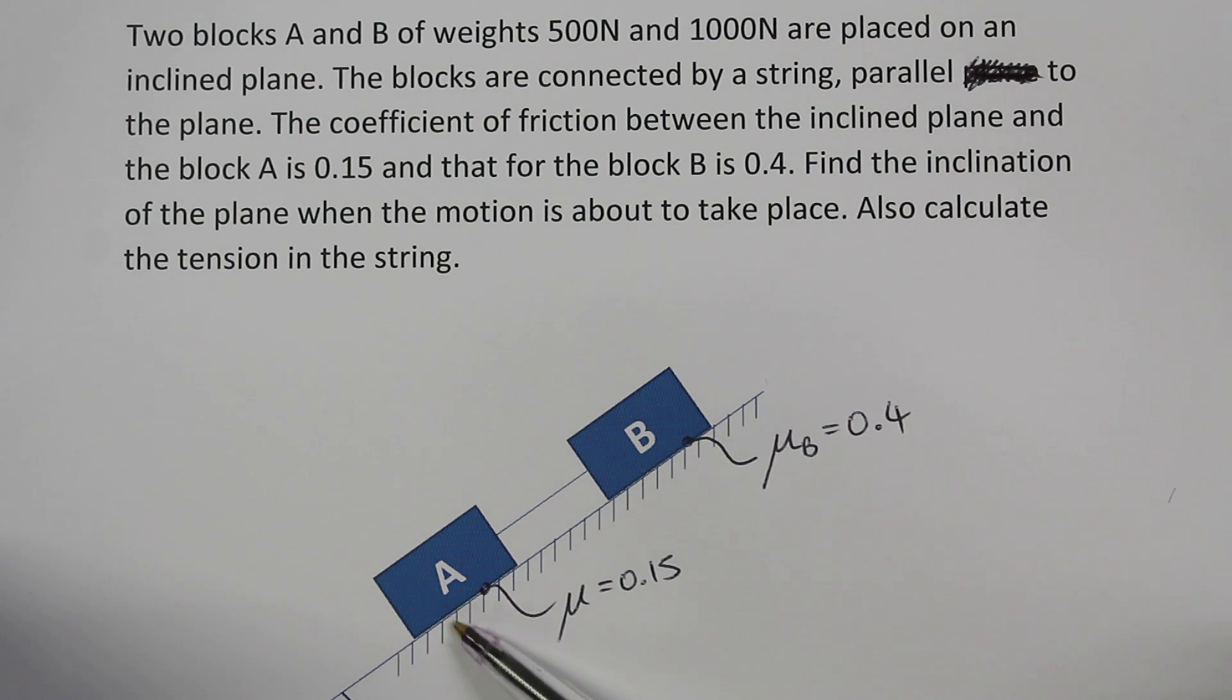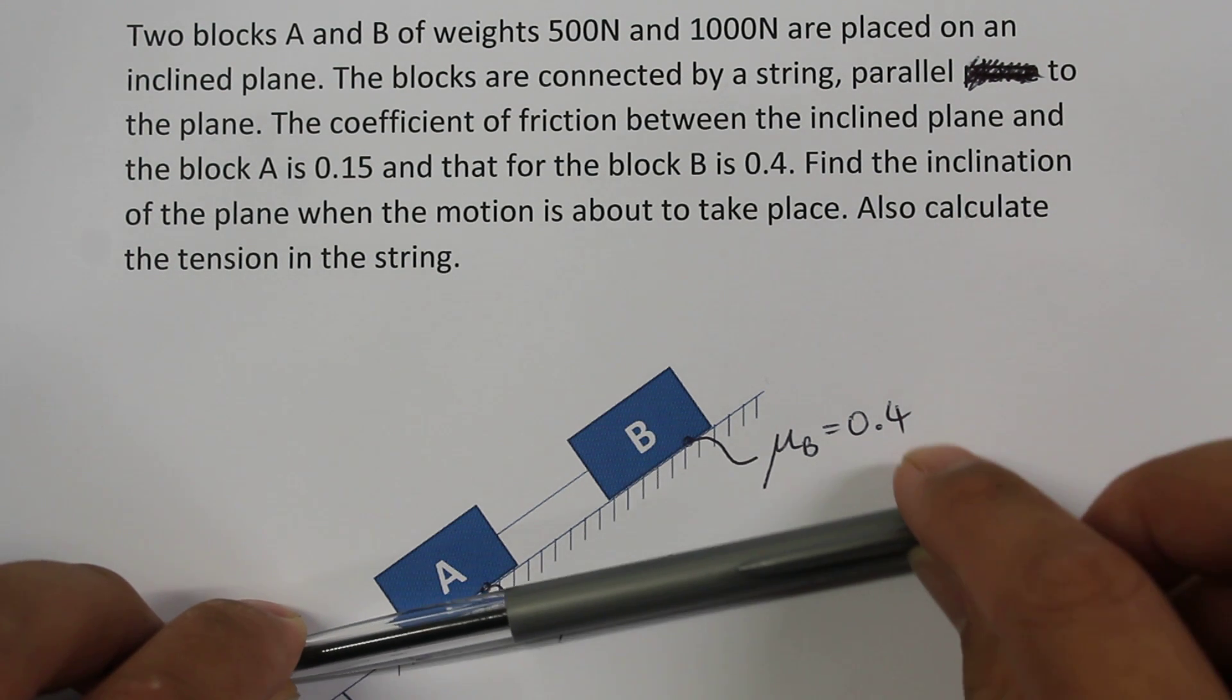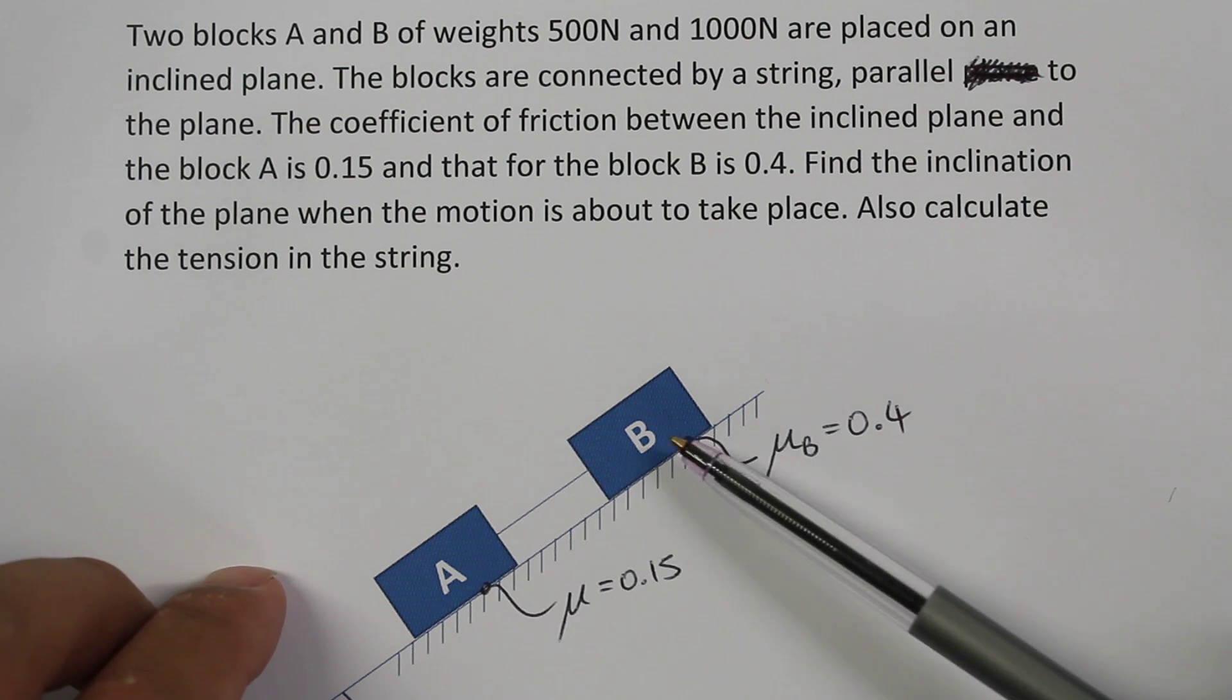Conceptually, there's something to understand here because we've got two coefficients of friction. The object with the lowest coefficient of friction is going to slide first, so object A, as the incline starts from a flat surface and then inclines up, this object is going to slide first before this object slides.